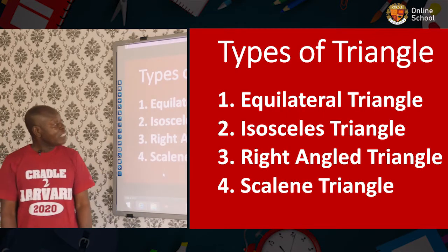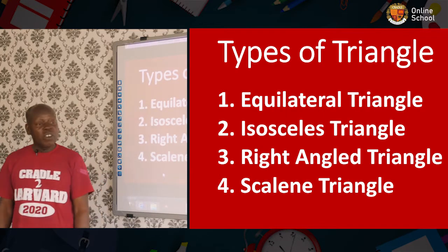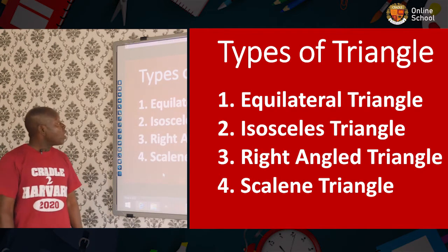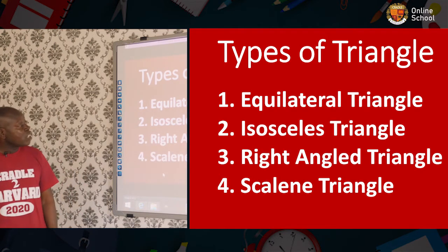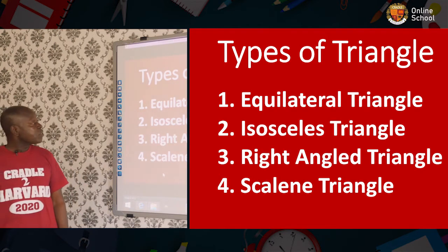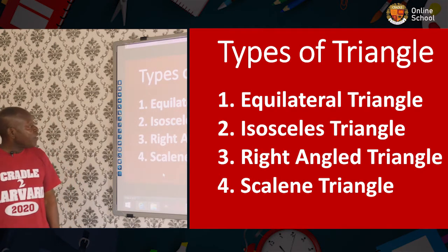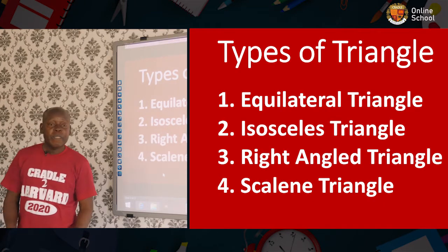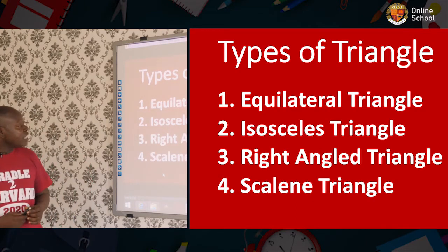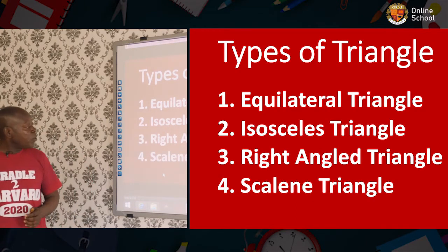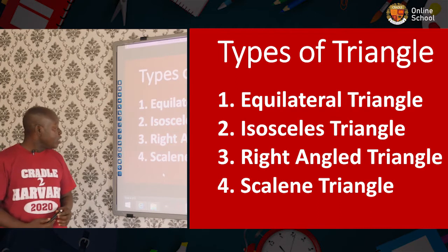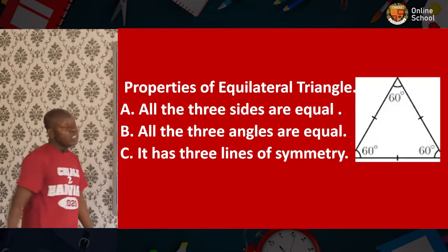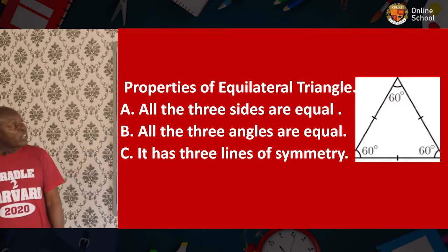Now let's look at the types of triangles. Number one, we have an equilateral triangle. Number two, we have an isosceles triangle. Number three, we have a right-angled triangle. And number four, we have a scalene triangle.